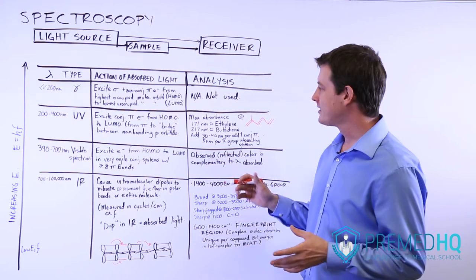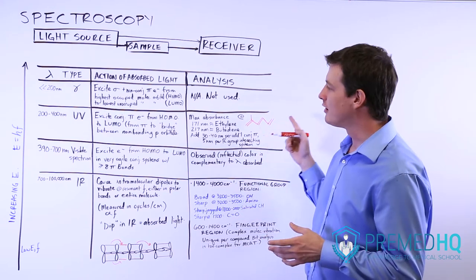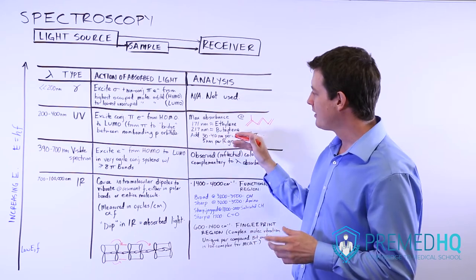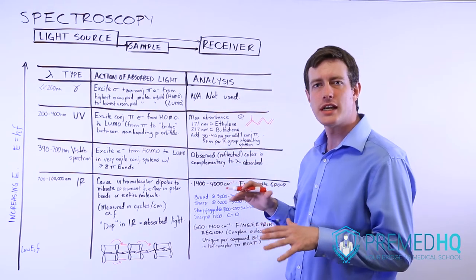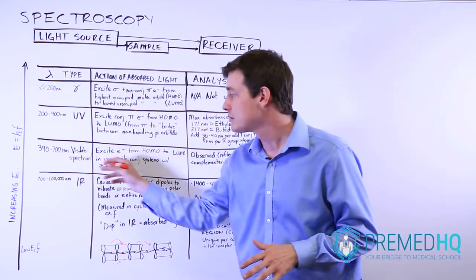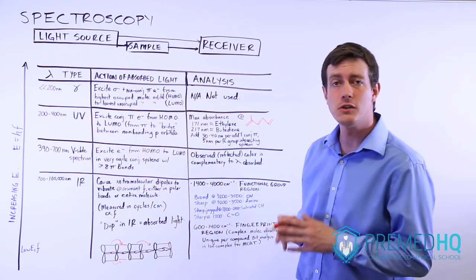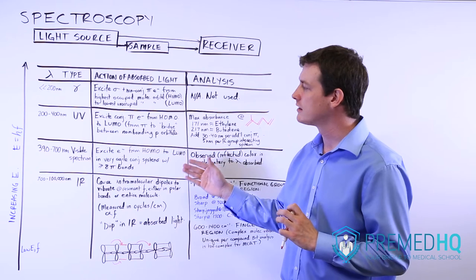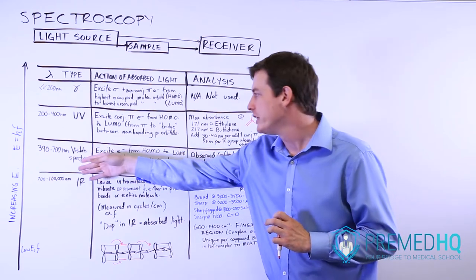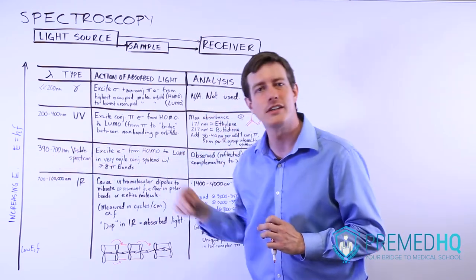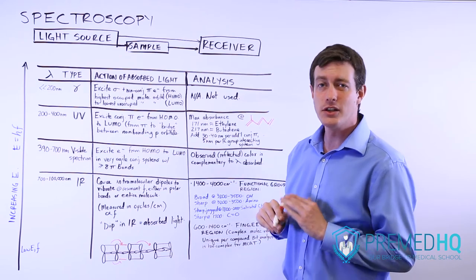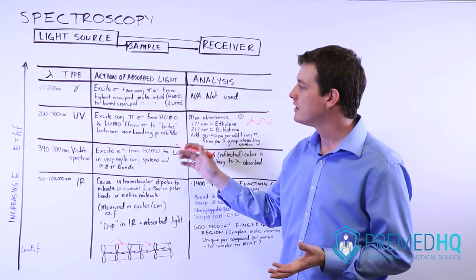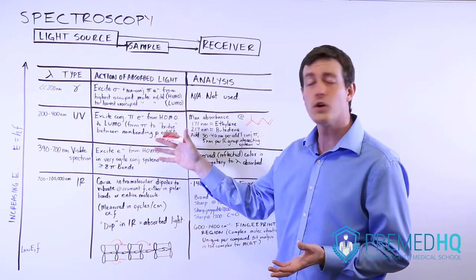As our conjugated system gets larger and larger, it's possible that we'll continue to add 30 or 40 nanometers until we get to a point where we're actually in the visible spectrum. Then we can do visible light spectroscopy, which is spectroscopy involving light in the visible range of 390 to 700 nanometers. A good example of this is beta-carotene, which is the compound in carrots that gives them their orange color.